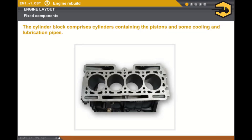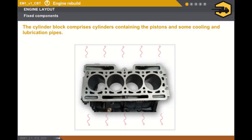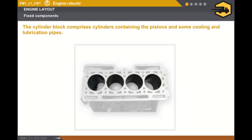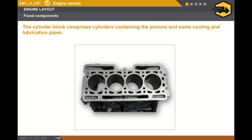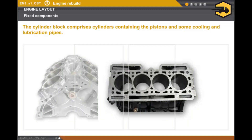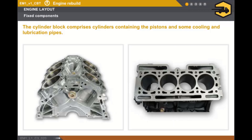Now let's look at the cylinder block in more detail. The role of the cylinder block is to withstand the combustion of the gases and to evacuate the heat. The cylinder block consists of the cylinders containing the pistons and the cooling and lubrication pipes which evacuate the heat and lubricate the moving components. For a long while the cylinder block was swaged or lined but today it is machined. The cylinder block is usually made from cast iron but sometimes it is a light alloy.